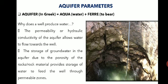How does a well produce water? We have all seen open wells where water enters clearly. The permeability or hydraulic conductivity of the aquifer allows water to flow towards the well — we will understand these terms in upcoming classes. The storage of groundwater in the aquifer is due to the porosity of the rocks or rock material, which provides storage of water to feed the well through the permeable zone.